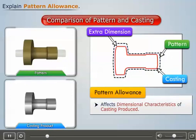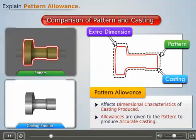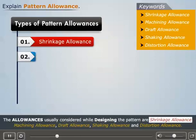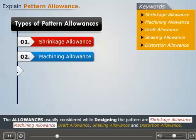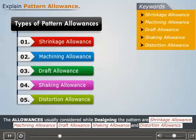When a pattern is prepared, certain allowances should be given on the sizes specified in the drawing so that a casting with the particular specification can be made. The allowances usually considered while designing the pattern are shrinkage allowance, machining allowance, draft allowance, shaking allowance, and distortion allowance.